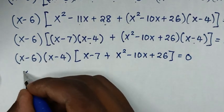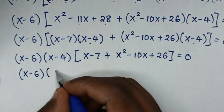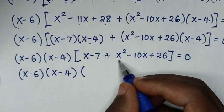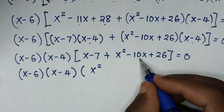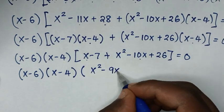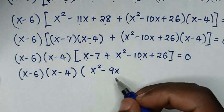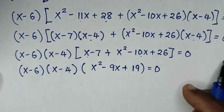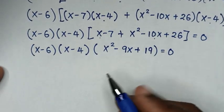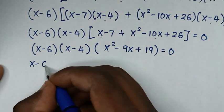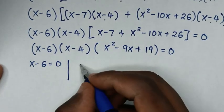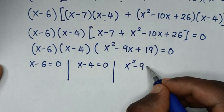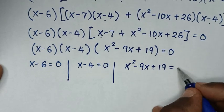So the fully factored equation is (x minus 6)(x minus 4)(x squared minus 9x plus 19) equals 0. From here we have three factor equations: the first solution is x minus 6 equals 0, the second solution is x minus 4 equals 0, and the third solution is x squared minus 9x plus 19 equals 0.